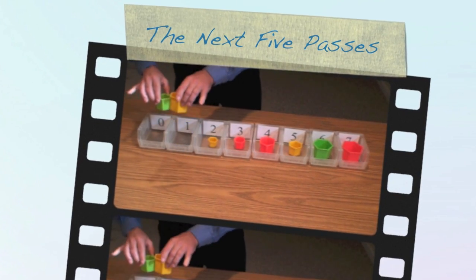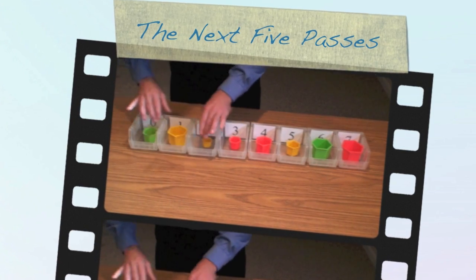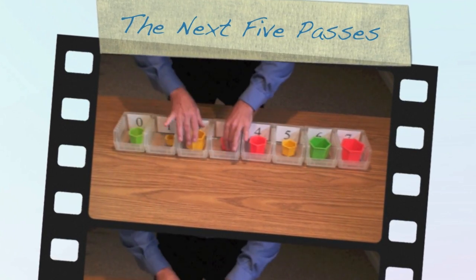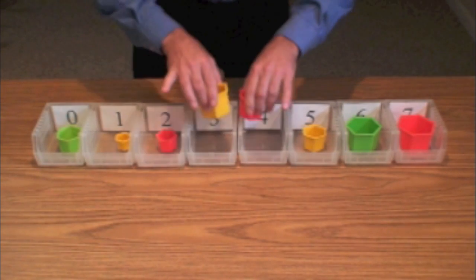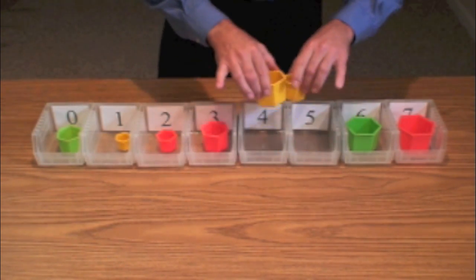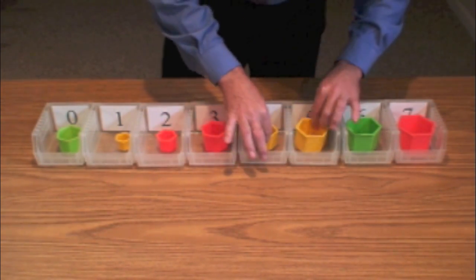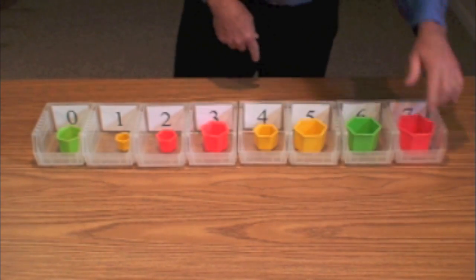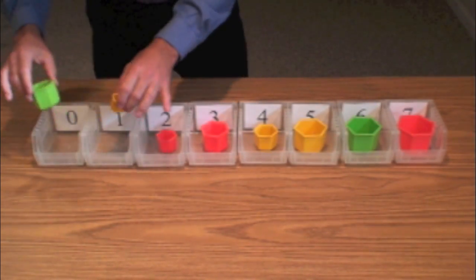So here we go — pass three. Compare, not out of order. Compare, out of order — exchange. Compare, out of order — exchange. Compare, out of order — exchange. Compare, out of order — exchange. Compare, out of order — exchange. There's pass number three. These three items — one, two, three down here — have all been put in the right location.